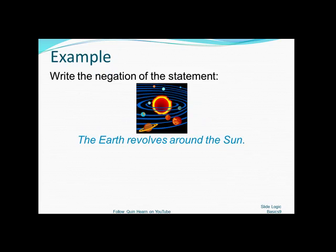Sometimes it's a little bit trickier than that, and we're going to look at some different scenarios. First example we're going to look at, the earth revolves around the sun. How would you write the negation of that statement? So if somebody said the earth revolves around the sun, and you disagreed with that person, what would you say?